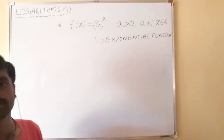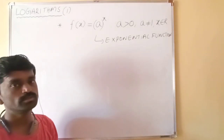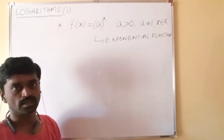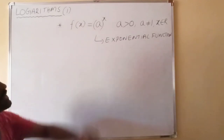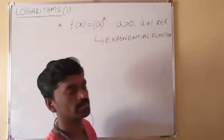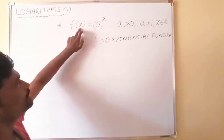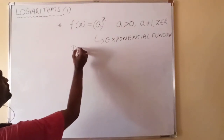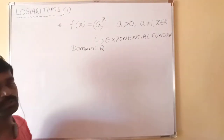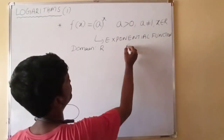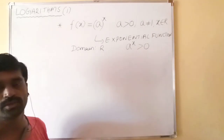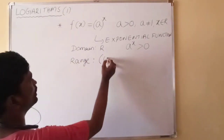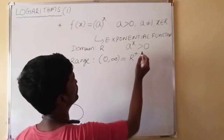This exponential function is generally used in calculating growth and decline of population, and it has many other applications. Now, if you observe this function f of x = a power x, it is defined for all real numbers x — you can input any real number for x. So the domain of this function is all real numbers. For any real number x, the function value a power x is always positive, so the range of this function contains only positive real numbers.